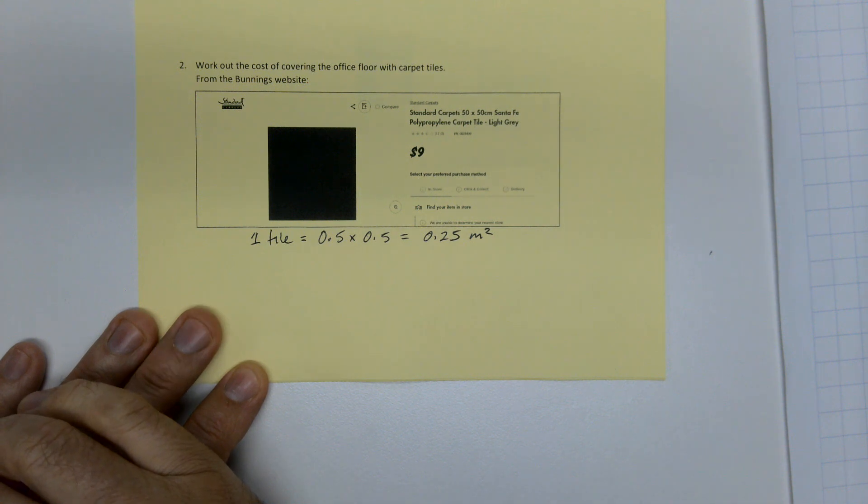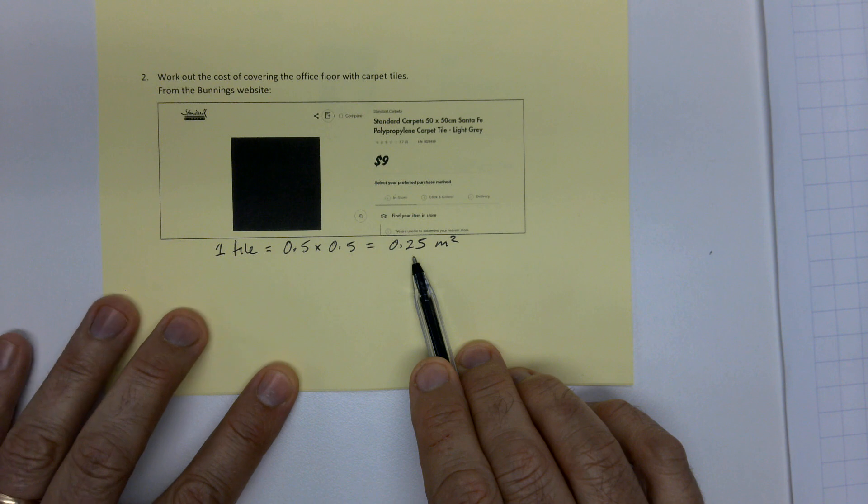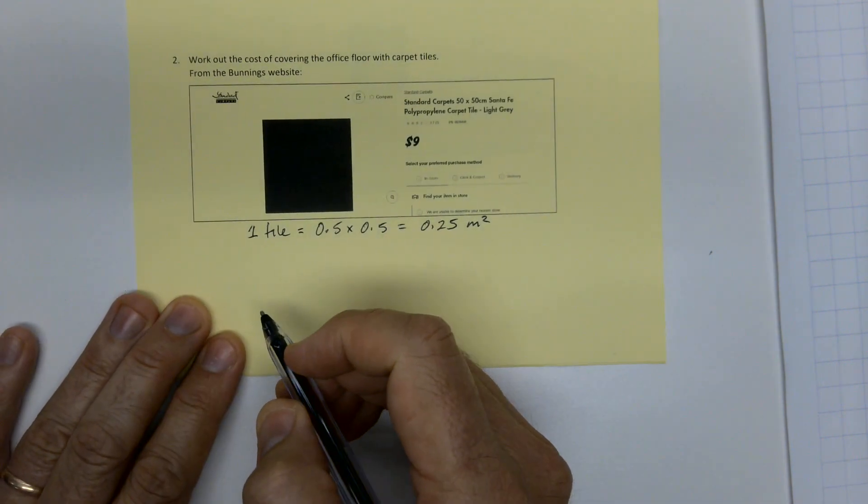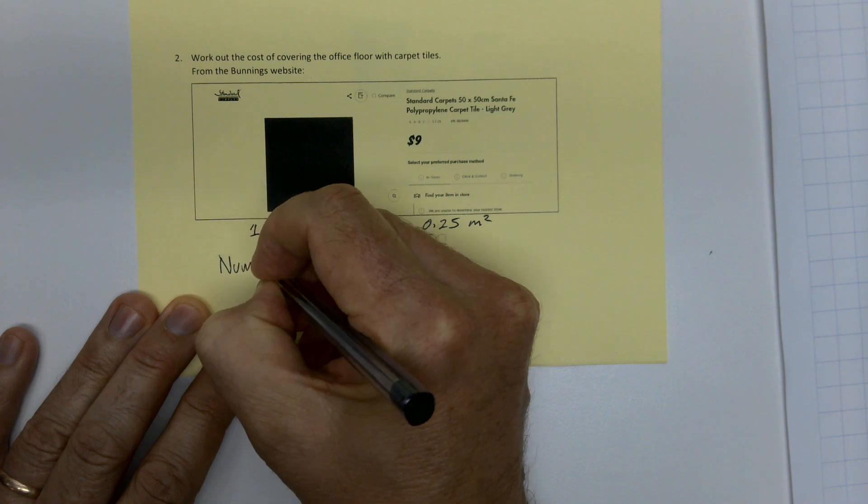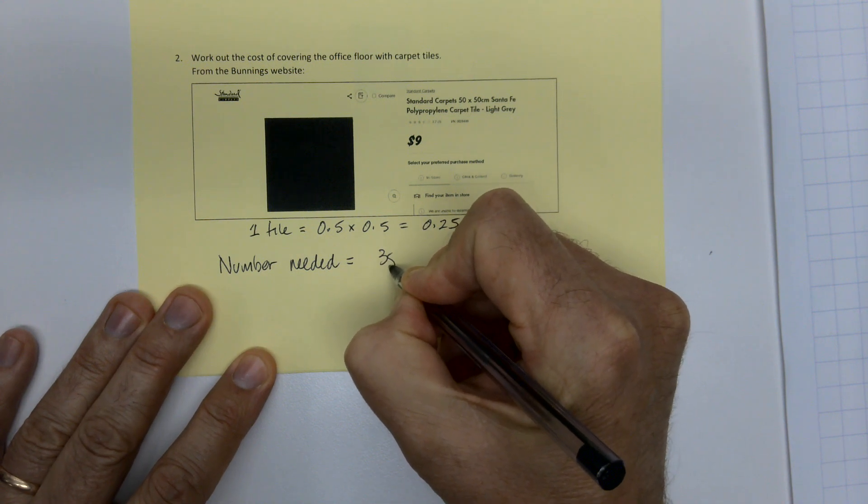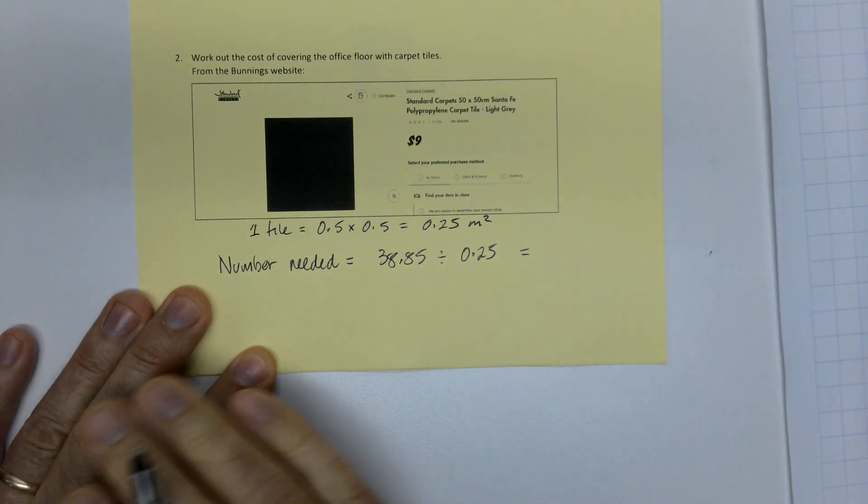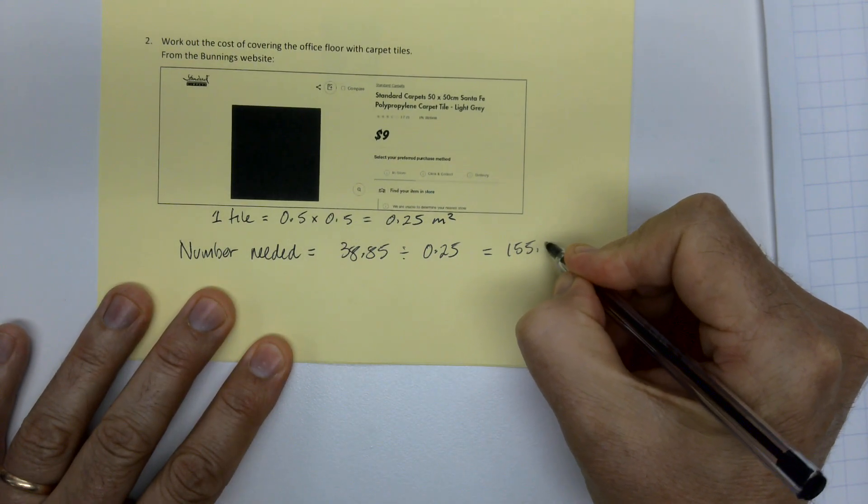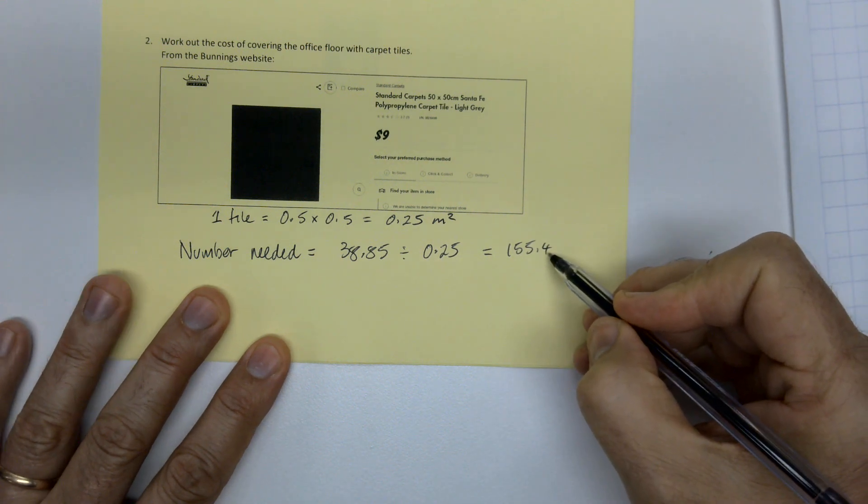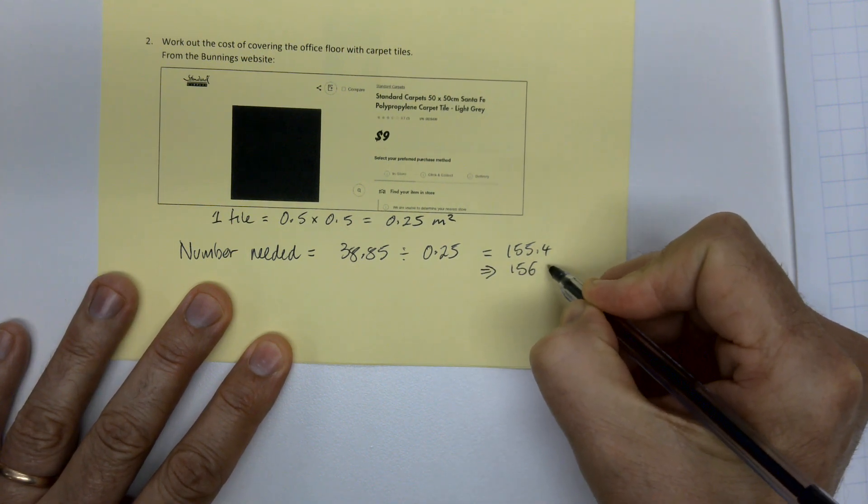So one tile takes up that many. Well, how do I know how many tiles I need? Well, you get the total area and divide it by the area of one tile. So number needed is 38.85 divided by 0.25. So the magic buttons tell you that that is 155.4. I can't have points. I can't buy 0.4 of a tile. I can buy 155 or 156. So I'm going to have to buy 156 tiles.